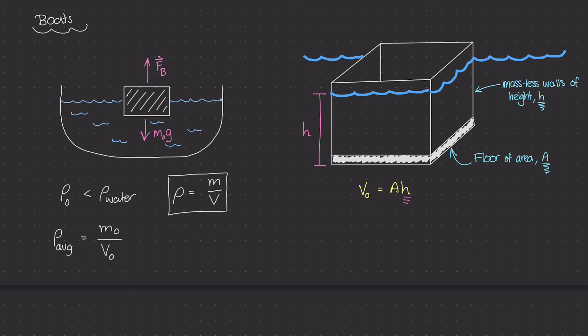Now, if we know that the mass density of the boat has to be less than the mass density of the water, then I can use this relationship to figure out what the minimum height of these massless walls needs to be in order for the boat to float. So how do we figure that out?